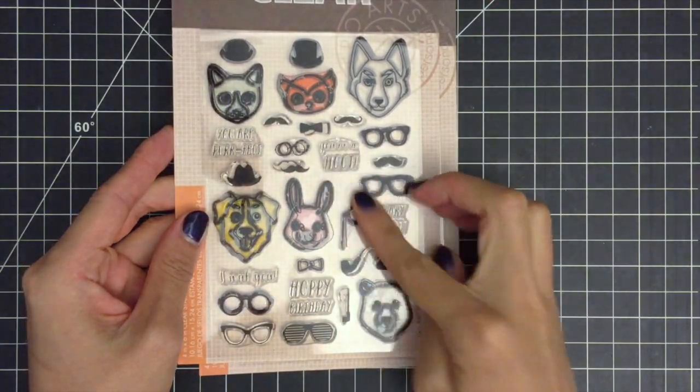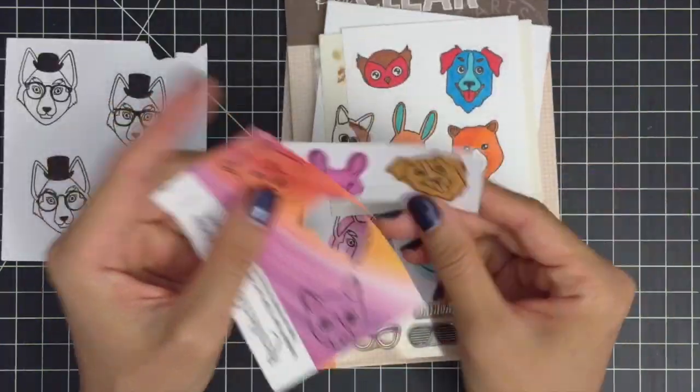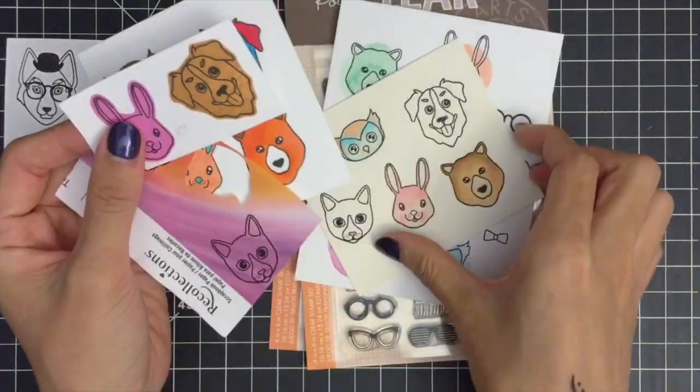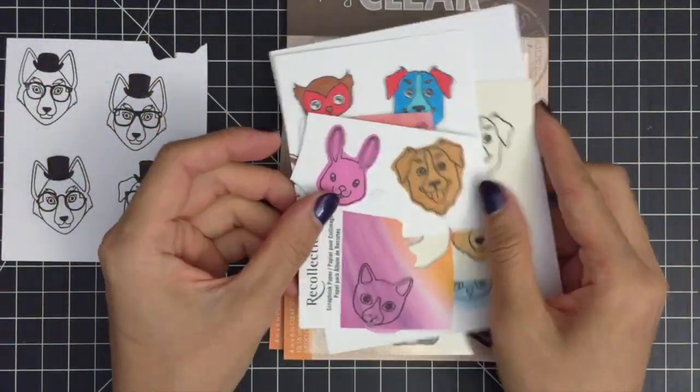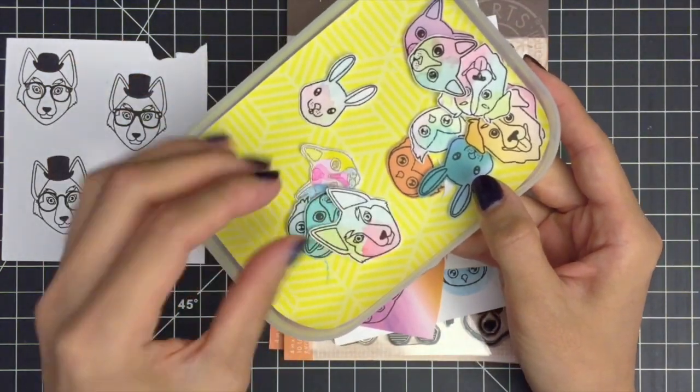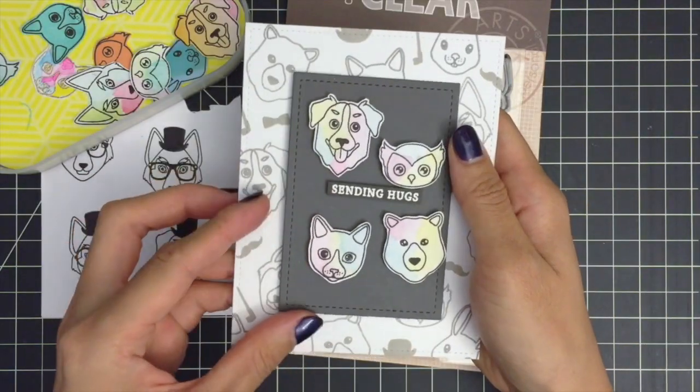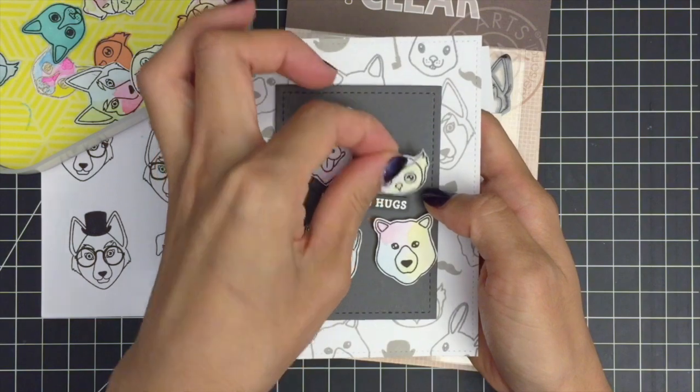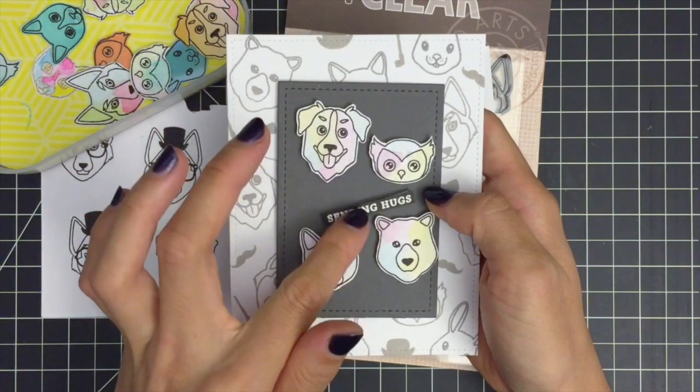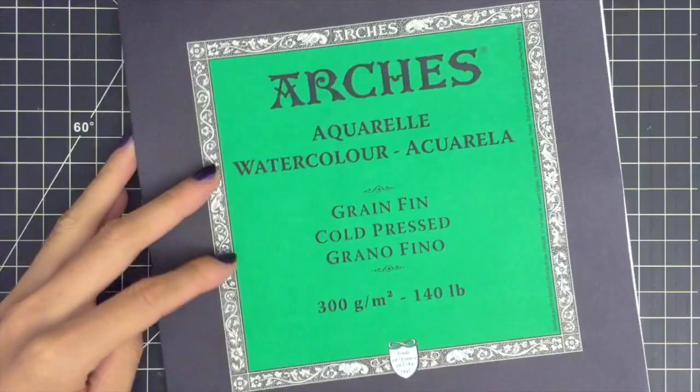I'll be using the Hipster Animal Stamp Set featuring trendy animals and stylish accessories. I tested out a few designs and this card is one of them. I created a stamped background using various images from the set and mounted the watercolor animals on the card front.